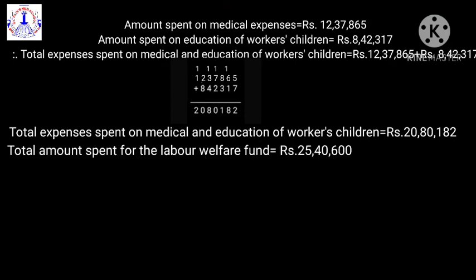How much was the amount in the labour welfare fund? It's 25,40,600. Our next step is to find the amount put aside for the canteen. To find this, we have to subtract the total expenses spent on medical and education of workers' children from the total amount in the labour welfare fund.